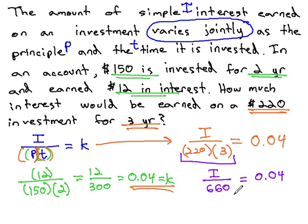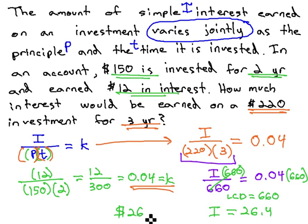We can clear that denominator by multiplying by the LCD of 660 on both sides. The LCD divides out, and we're just left with I. The amount of interest earned, 0.04 times 660, is 26.4, or $26.40.